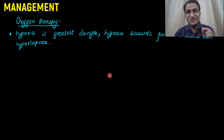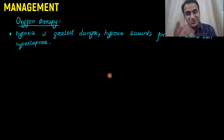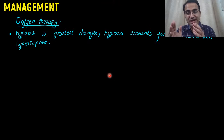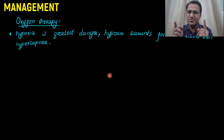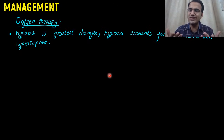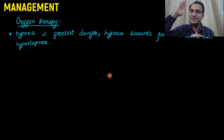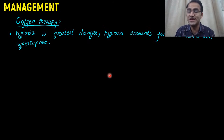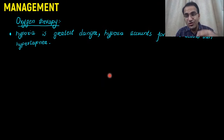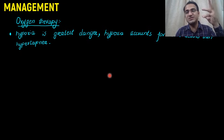Now we will discuss oxygen therapy. In COPD patients, we give controlled oxygen — if the saturation is less than 88%, we give controlled oxygen therapy to maintain the saturation between 88 to 92%. Why are we not trying to bring the saturation up to 97 or 98% like we do in normal individuals? Because in healthy individuals, CO2 retention drives the respiratory center.